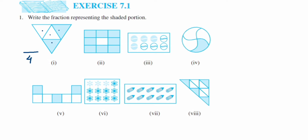Now we count how many parts are shaded. You can see this part is shaded and this part is shaded — two out of four parts are shaded. So the fraction will be two upon four.